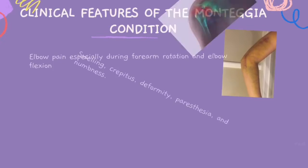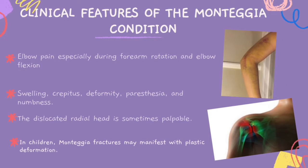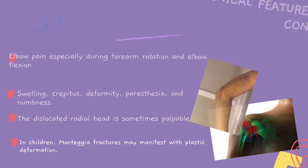Clinical features of the Monteggia condition: the patient may feel pain in their elbow, especially during forearm rotation and elbow flexion. At the affected area, there will be swelling, tenderness, deformity, paresthesia, and numbness. The dislocated radial head is sometimes palpable, and in children, Monteggia fractures may manifest with plastic deformation.